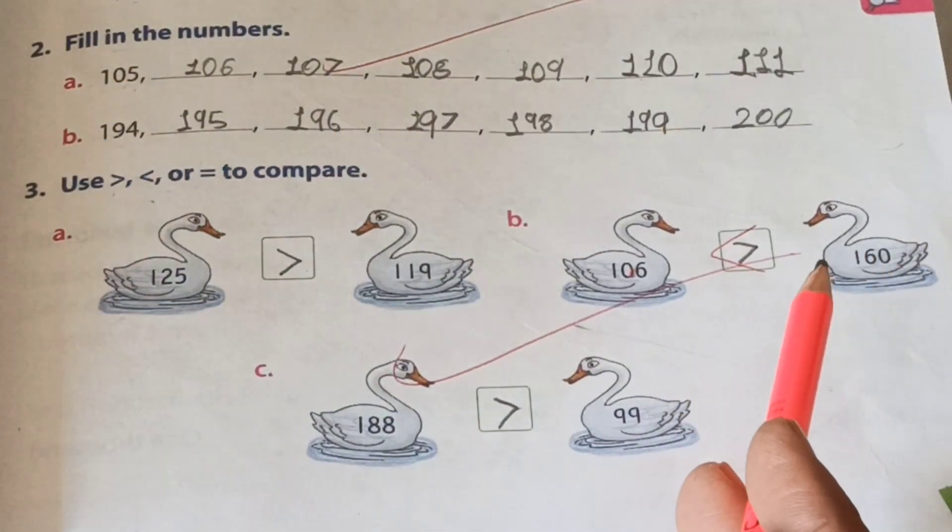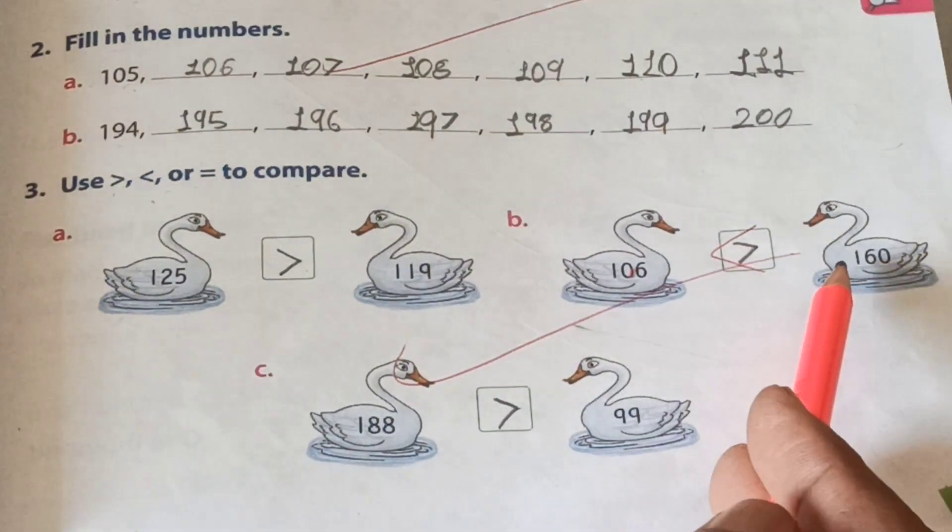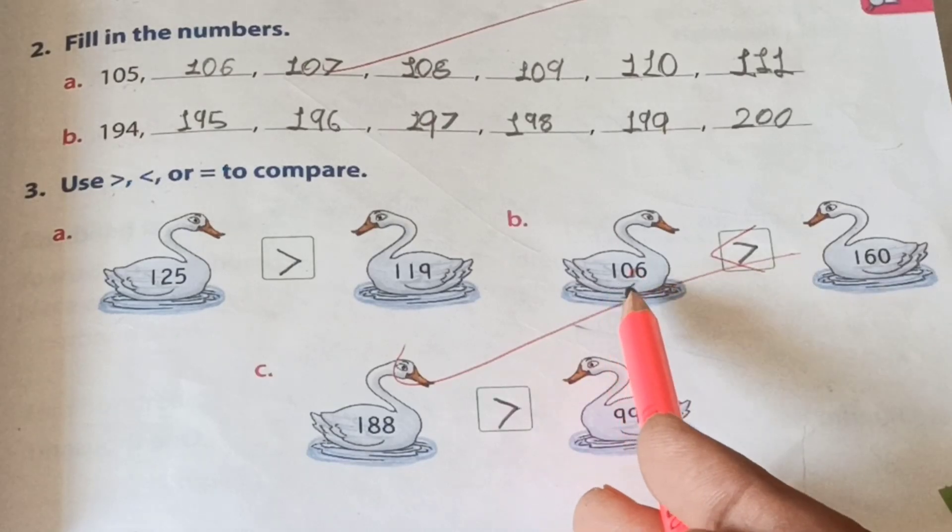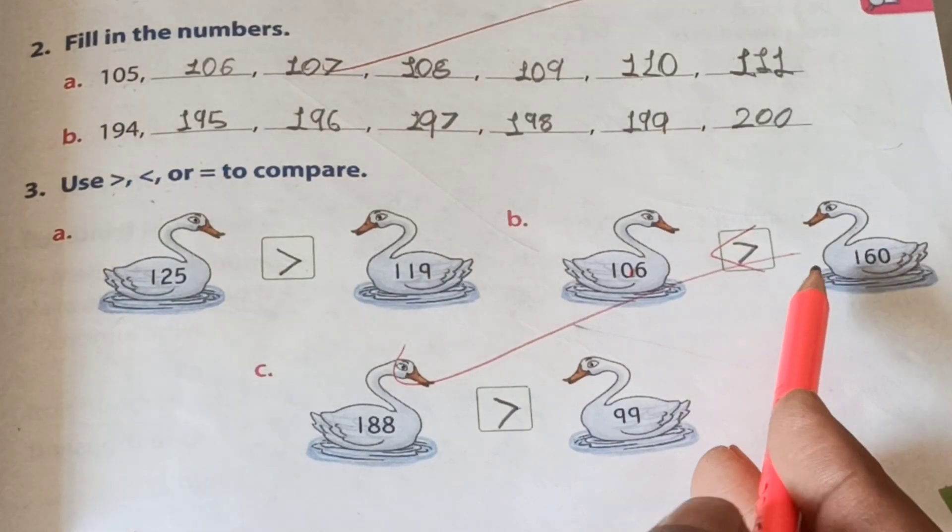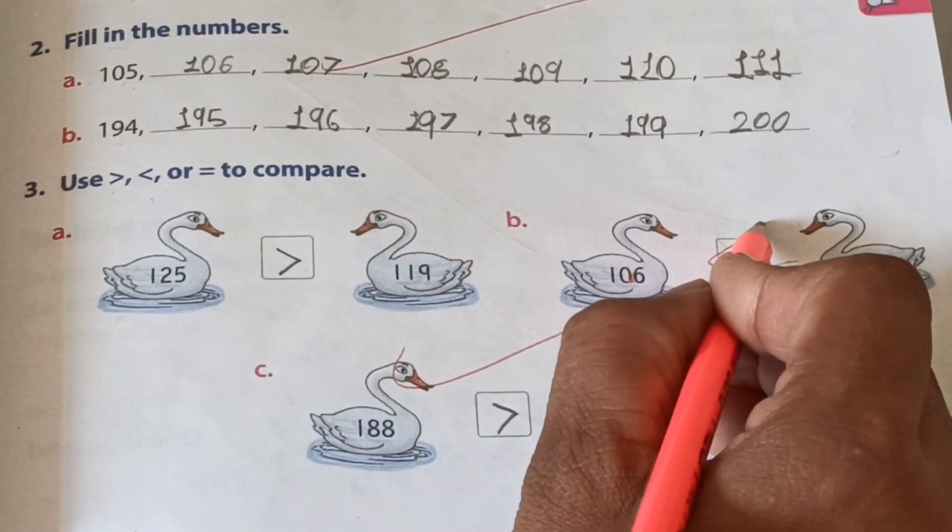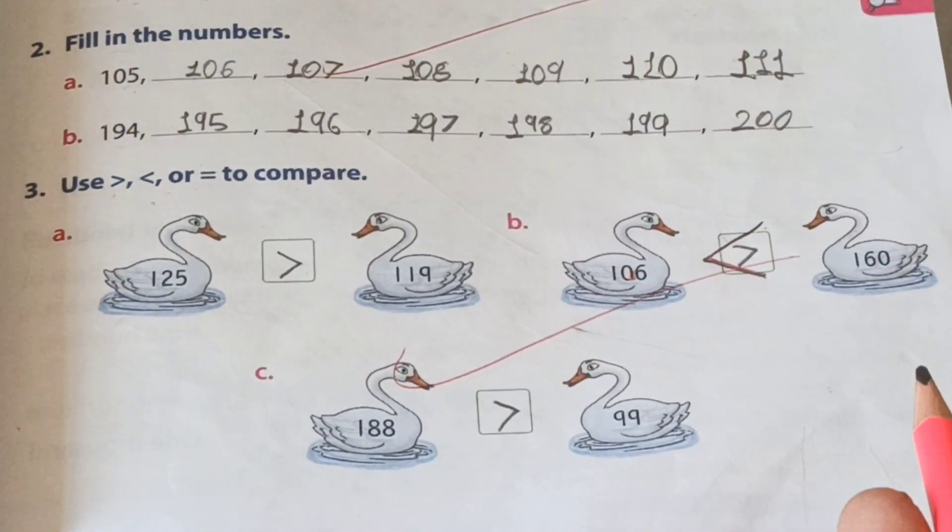So this one, one hundred sixty, crocodile wants to eat because one hundred six is a smaller number. So we use here this sign.